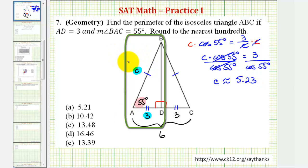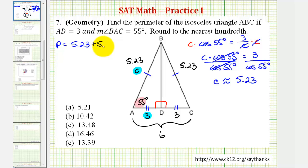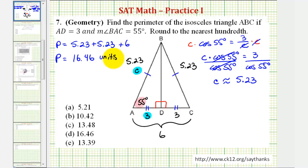So if the length of AB is approximately 5.23 units, then so is the length of CB. Therefore the perimeter of the isosceles triangle is equal to 5.23 plus 5.23 plus six, so the perimeter would be 16.46 units. This means our answer is D: 16 and 46 hundredths.